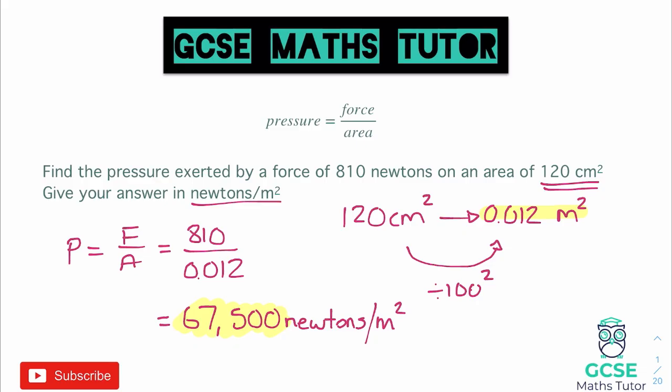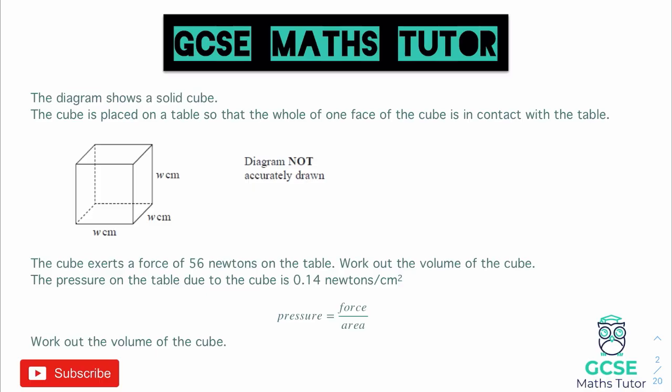Now let's have a look at the question we saw at the start. We have a slightly different question — the diagram shows a solid cube placed on a table so that the whole of one face is in contact with the table. The cube exerts a force of 96 newtons on the table, and the pressure on the table due to the cube is 0.14 newtons per centimetre squared. We're given the formula pressure equals force over area, and we need to work out the volume of the cube.